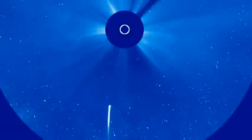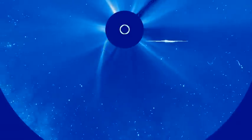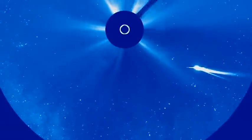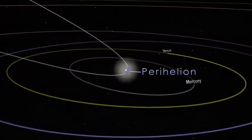All the comets that we can see from Earth are orbiting the Sun, but some belong to a special group called sungrazing comets. Sungrazers are comets that come very close to the Sun at their nearest approach, a point called perihelion.